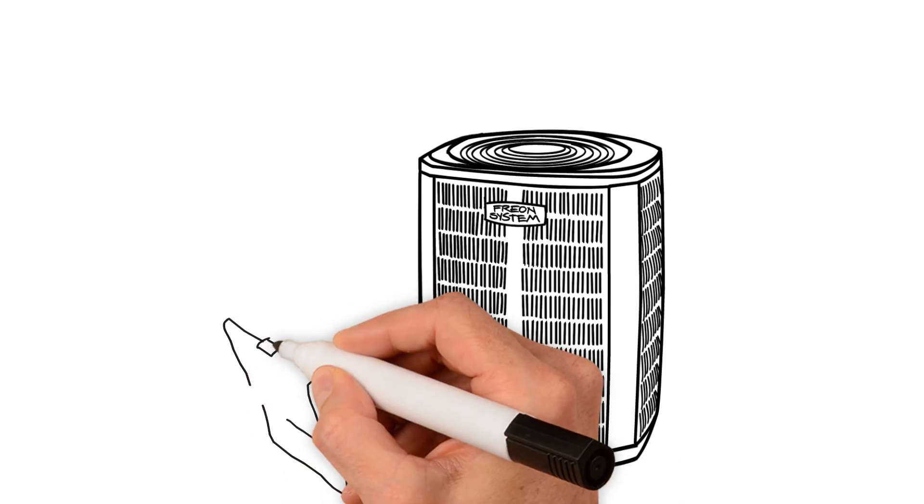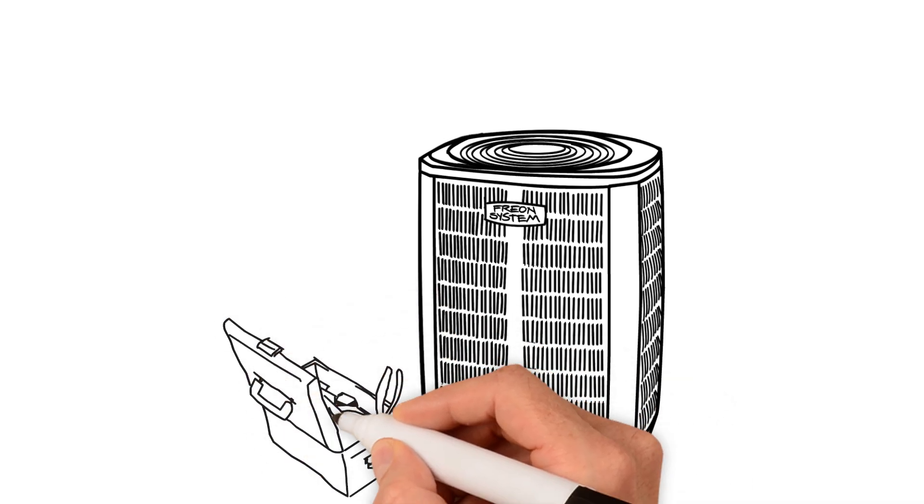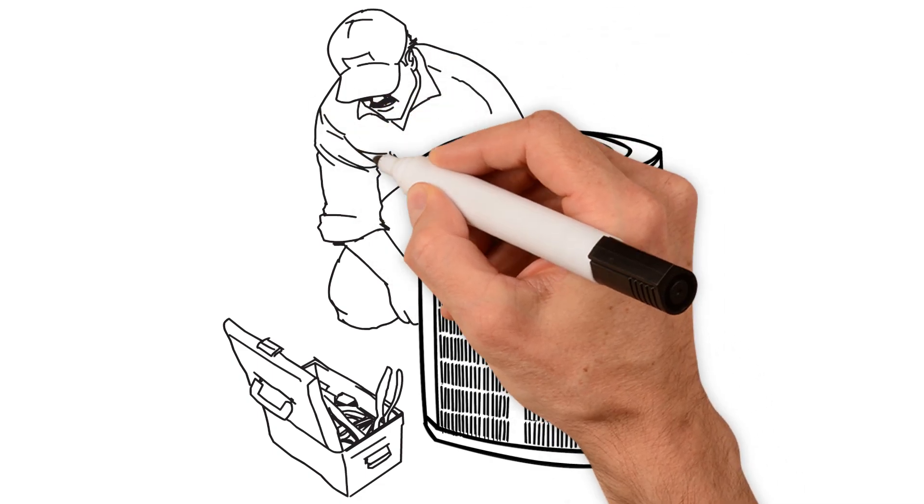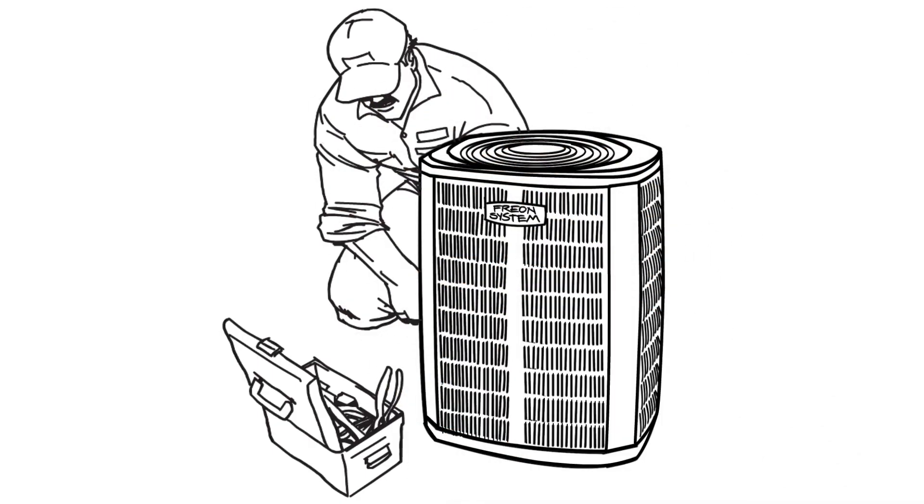Of course, the next question is, can I just modify my existing air conditioner to make it compatible with Puron? The simple answer is that it depends on the type of air conditioner. Sometimes split systems can be modified, whereas packaged AC systems must be completely replaced. Let's take a look at the two different systems.